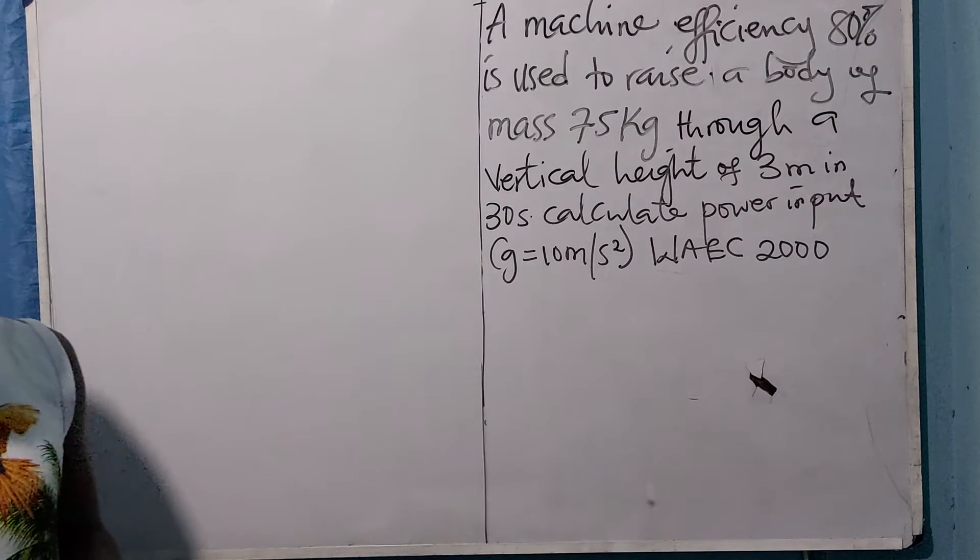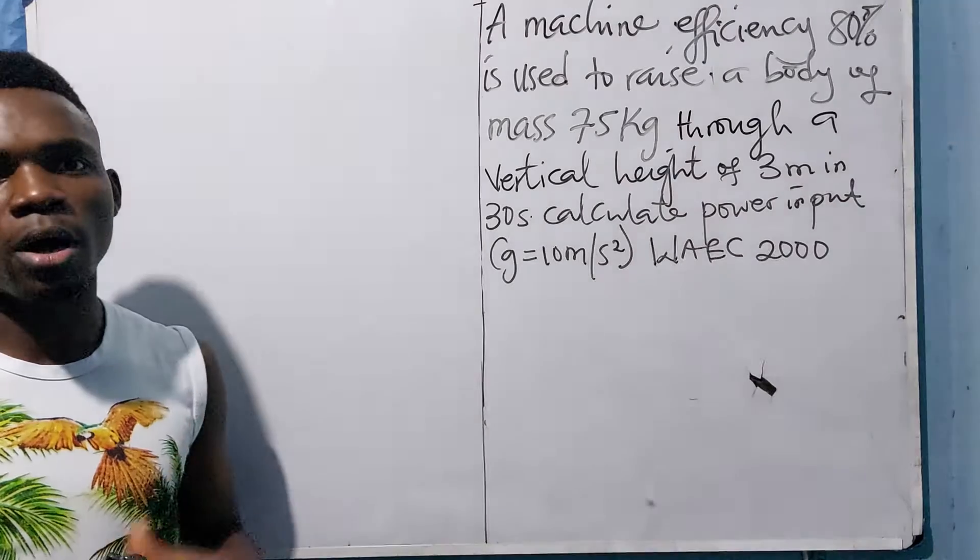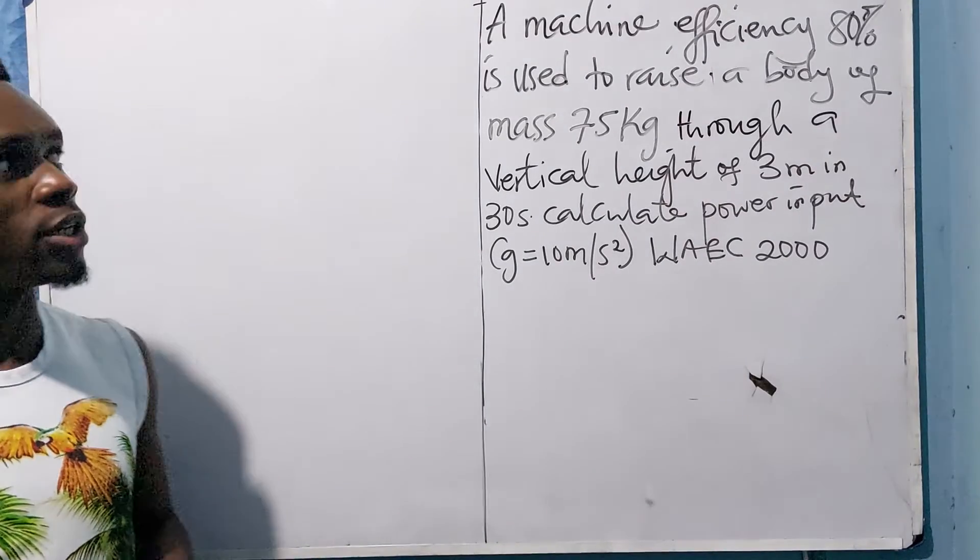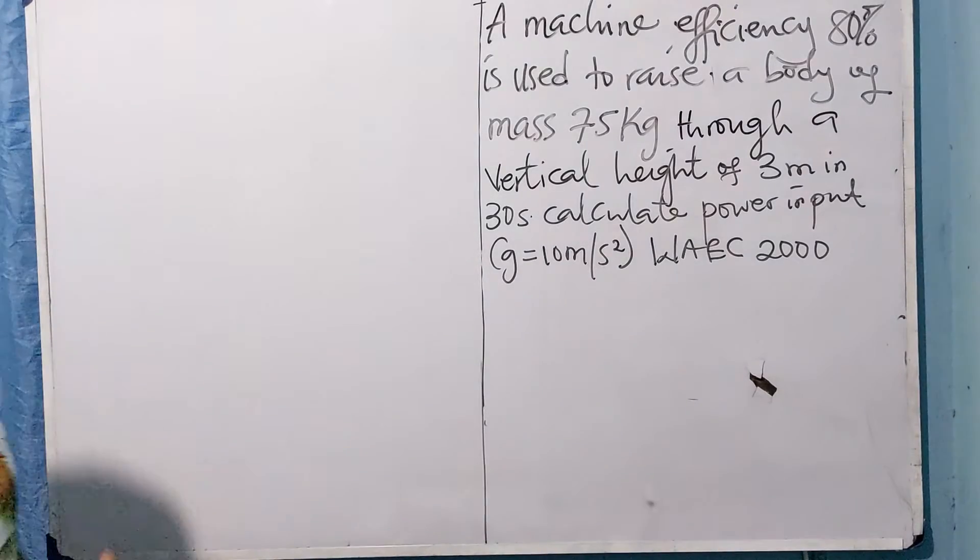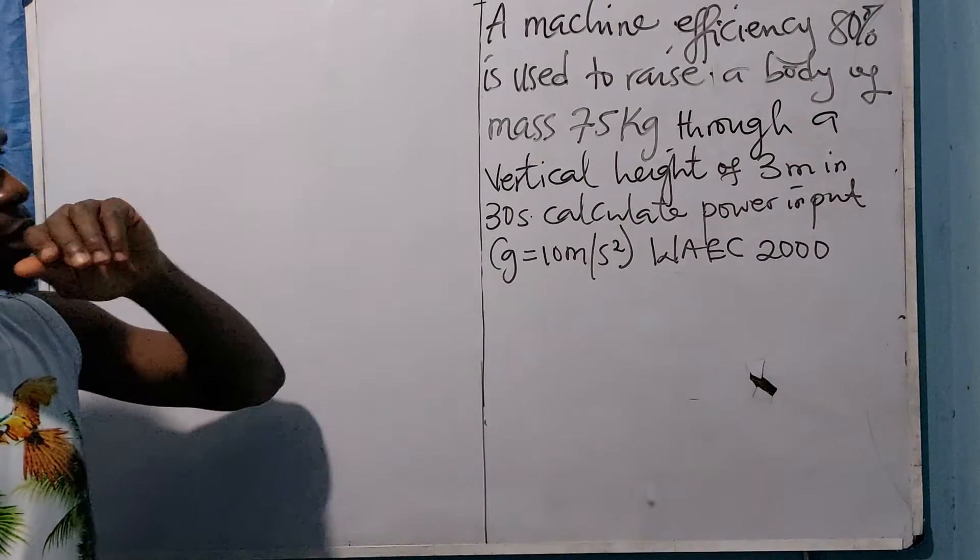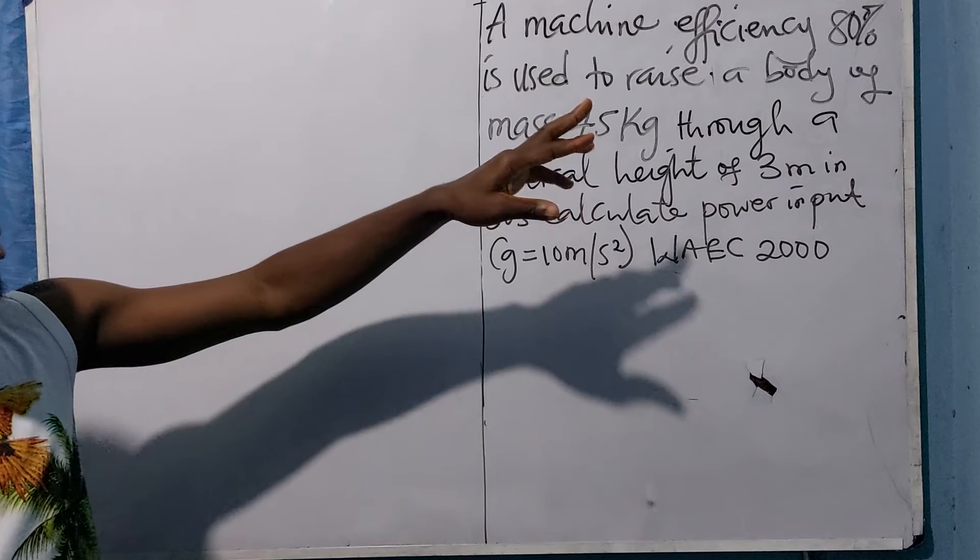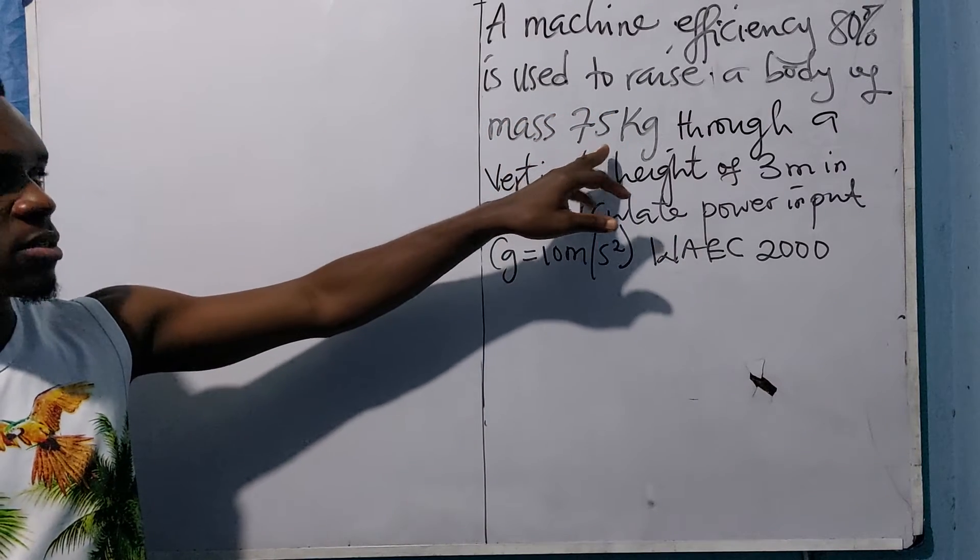We'll solve questions on efficiency as well as power input and power output. This question on the board is from work, energy, and power. The question says: a machine efficiency of 80% is used to raise a body of mass 35 kg through a vertical height of 3 meters in 30 seconds. Calculate the power input.